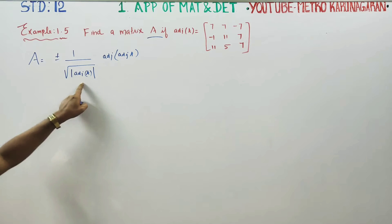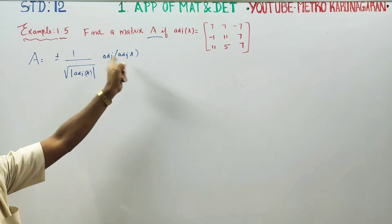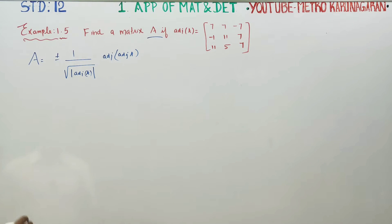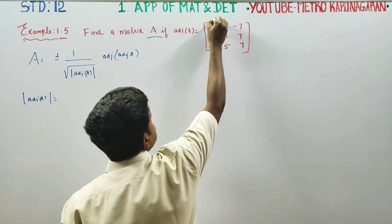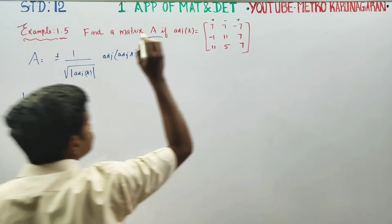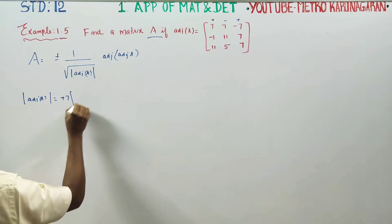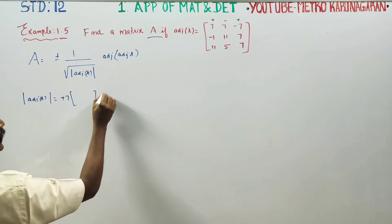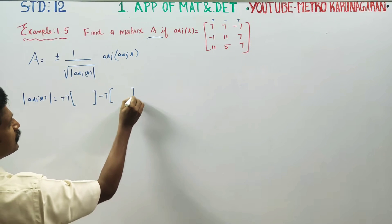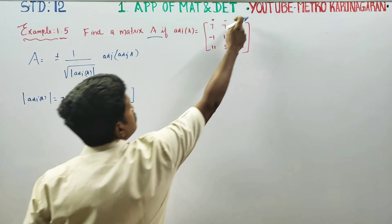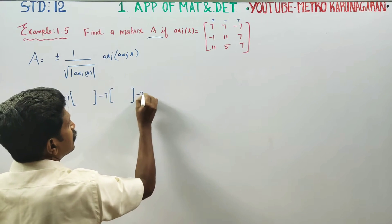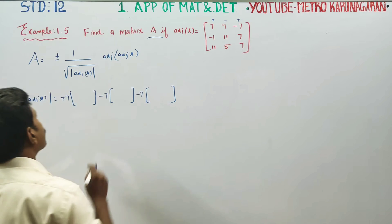First determinant of adjoint A. Determinant of adjoint A, plus, minus, plus. Plus 7 into that minor, minus 7 into that minor, plus into minus 7 into that minor. What is the model?